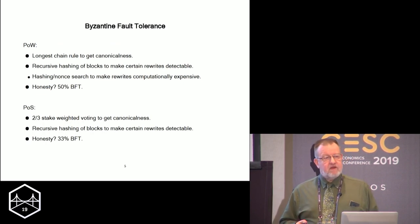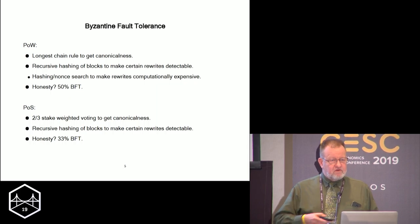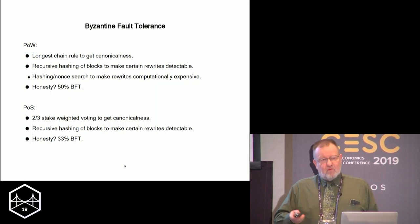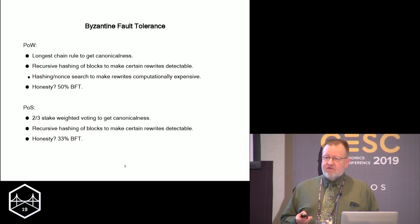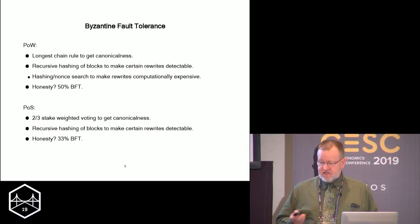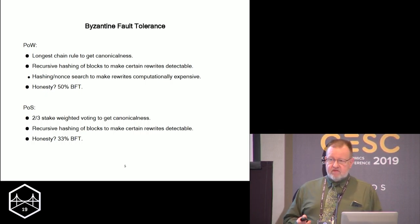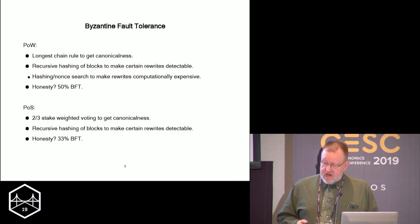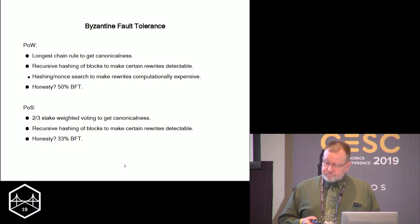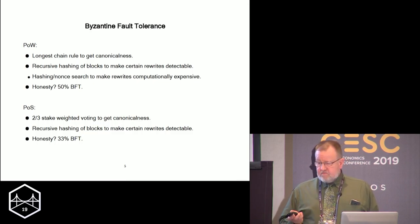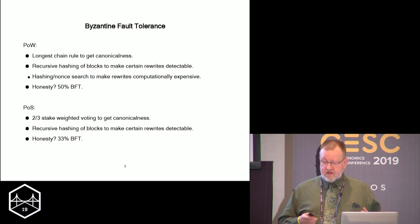There's also another result that works its way into all of these consensus mechanisms: the idea of Byzantine fault tolerance. This really comes from computer science and talks about how much of the system has to be honest — how much of it has to function correctly to achieve the outcomes that you want.